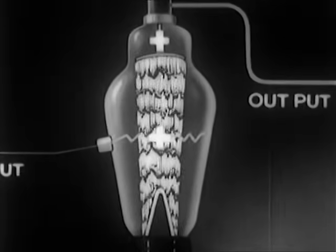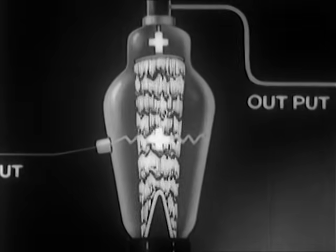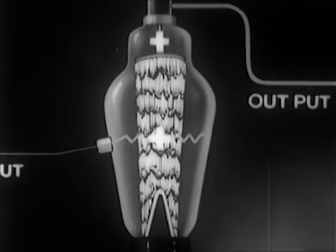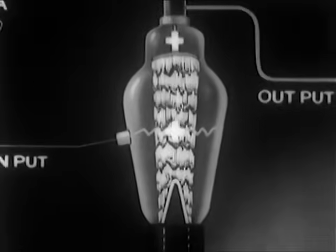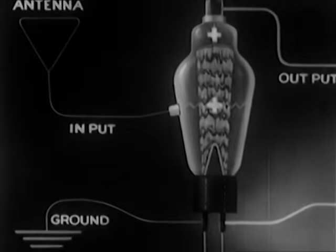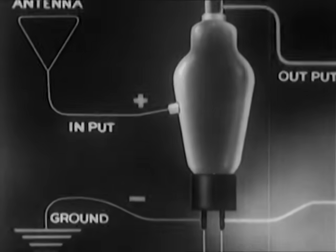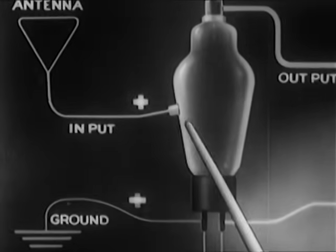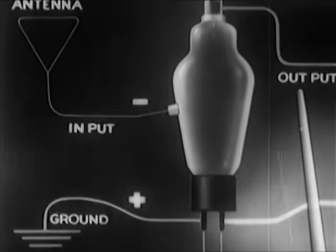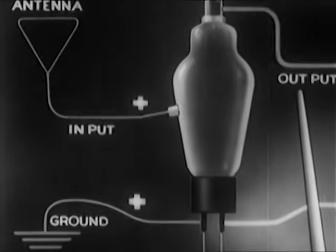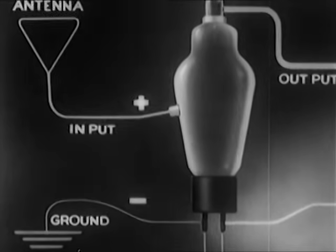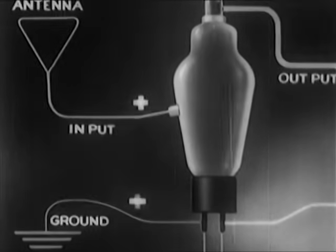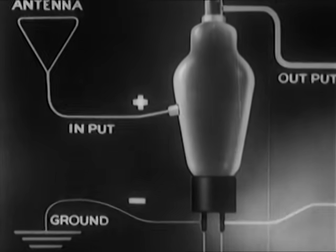Conversely, when the grid is positive, an equally large effect is exerted in increasing the flow of electrons from cathode to anode. The important thing to note here is this: a small amount of power applied at the grid is amplified into a large amount of power in the anode, or work circuit. This amplifying property of the three-element electronic tube is put to work in innumerable ways.